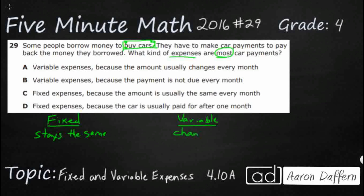For example, for most people a water bill is going to be variable because it changes based on how much water you use. An electricity bill can actually be a little bit of both — it can be really high in the summer and pretty low in the winter, but it could be fixed if you work out a plan to pay the same amount each month, evening out over the entire year. Your grocery bill is definitely variable because each month it's slightly different based on the food you buy.